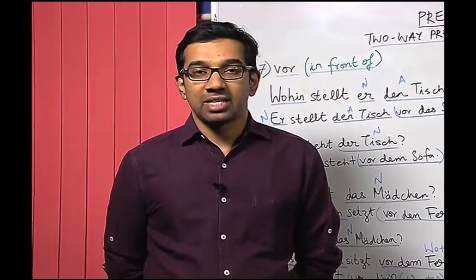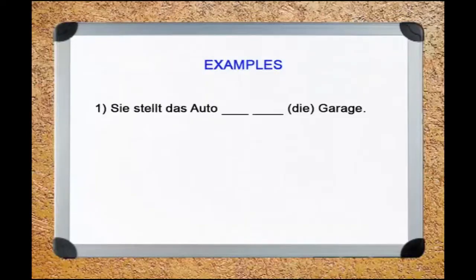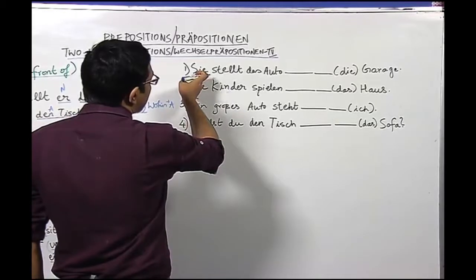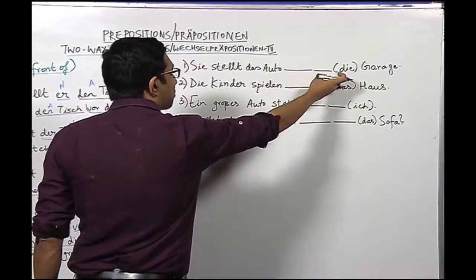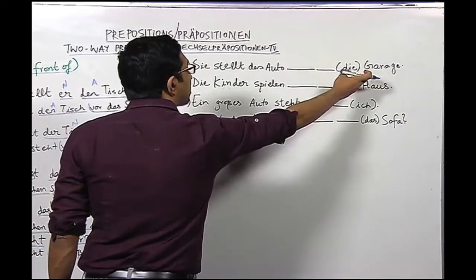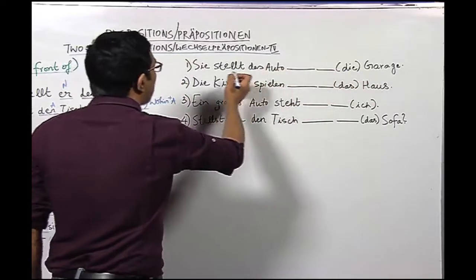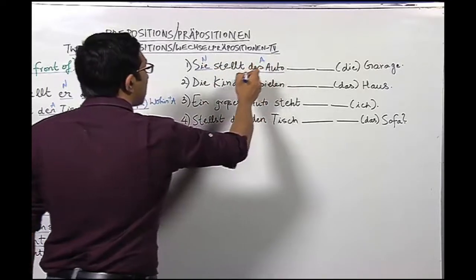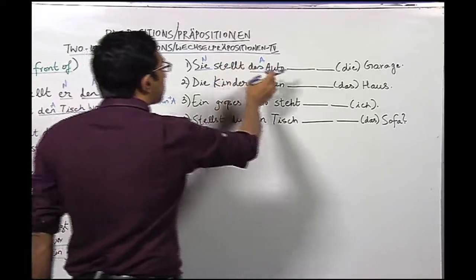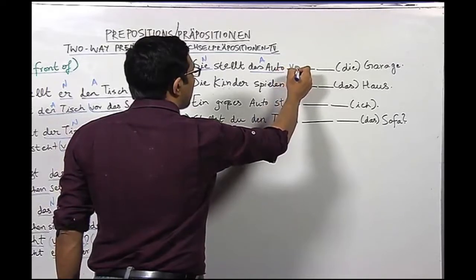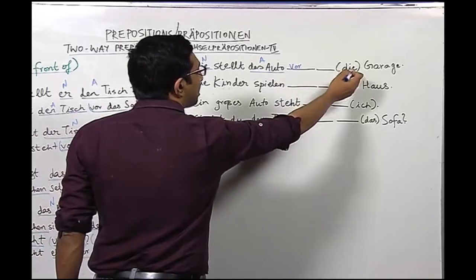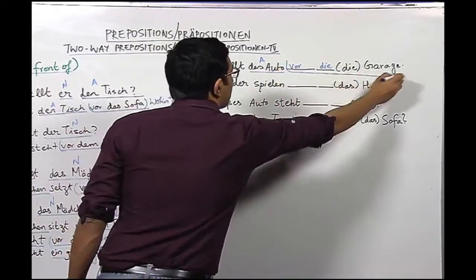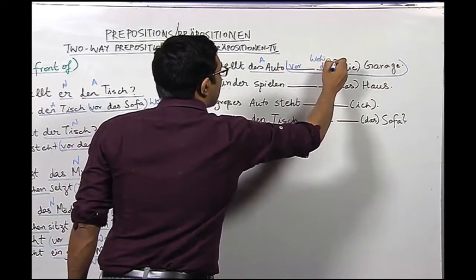Now let us do some examples to understand the preposition 'vor' better. Sentence number one: Sie stellt das Auto vor die Garage. Mark the nouns: 'sie' is nominative, 'das Auto' is accusative. With the verb 'stellen', 'vor' will be used in accusative case. The article 'die' for Garage remains 'die' in accusative, so we have: Sie stellt das Auto vor die Garage. With this we also get the wohin question answered in accusative.